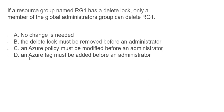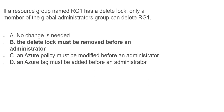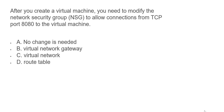Option D states an Azure tag must be added before an administrator can delete — tags are just used to identify a resource or resource group and have no relation to the delete step. So options C and D are wrong and B is correct — you must remove the delete lock first.